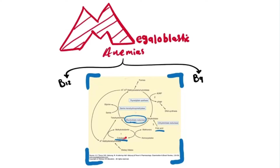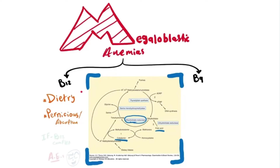If there's deficiency in cobalamin or folic acid, that will be an issue. Deficiency can be dietary — not consuming enough B12 — or it could be pernicious, related to the intrinsic factor. B12 is consumed and then binds to intrinsic factor secreted by parietal cells in the stomach, and later absorbed in the distal ileum. If there's an issue with intrinsic factor production, that's pernicious anemia, or if there's an absorption issue in the ileum. How do we treat those? If it's dietary, we just give B12. If pernicious, we have intrinsic factor-B12 complexes. Notably, B12 administration does not have significant adverse effects even in high doses.